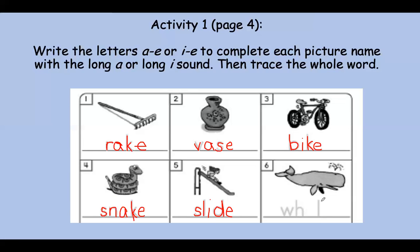All right, now this one is kind of tricky — not sure why they put this one, because we don't really hear that A sound. This is whale. So do you think it could be an A or an I? Whale. Well, if you said A, you are right. But that one is a little tricky because we do not hear that A sound clearly. Let's trace whale.